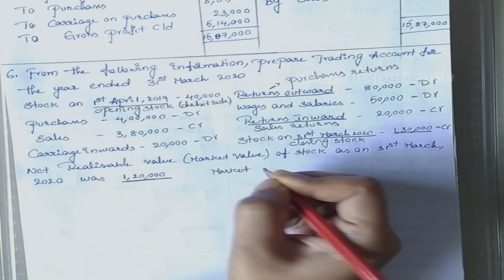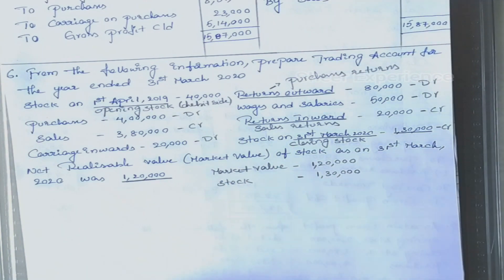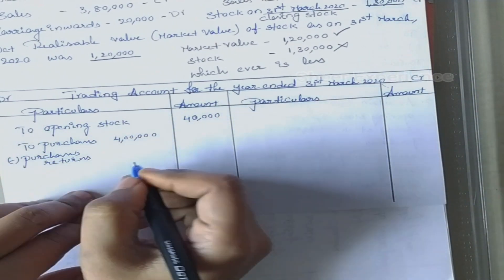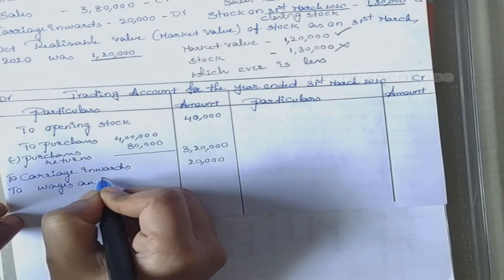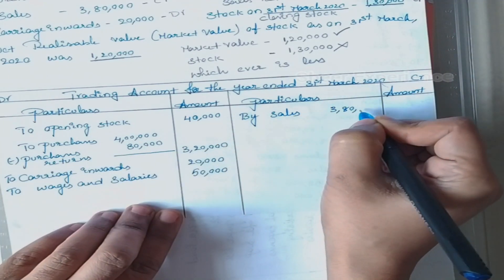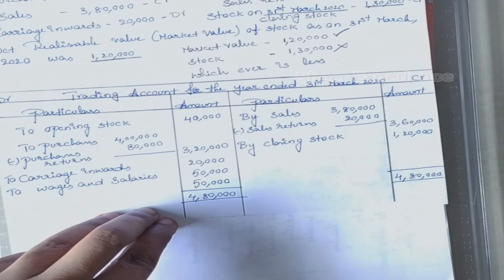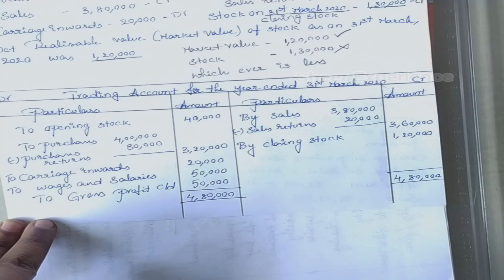Here the closing stock value is 1,30,000 and market value is 1,20,000, so we should consider 1,20,000. Now we will prepare the trading account. Gross profit is 50,000.